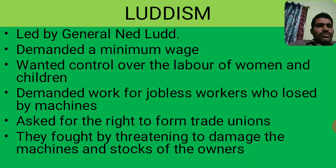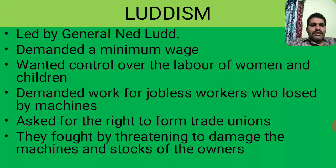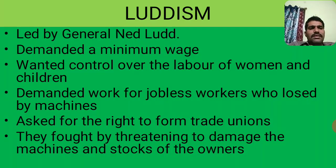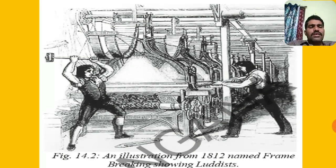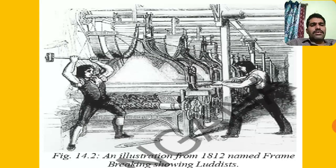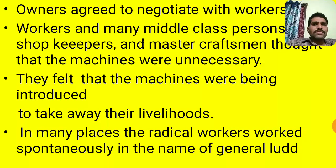Workers thought that by threatening to damage machines and stocks of the owners, they could pressure factory owners. The workers threatened that they would damage machines and stocks of owners. Here we can observe workers destroying machines — they thought that because of machines only they lost their jobs, that's why they were destroying them. Finally, owners agreed to negotiate with workers.